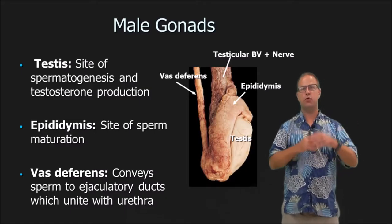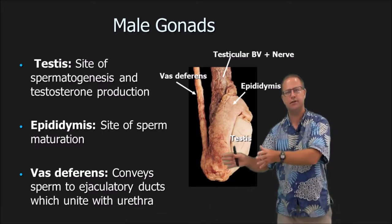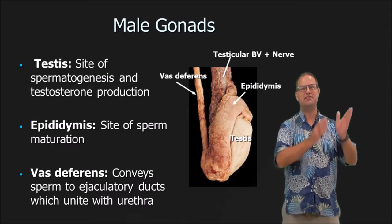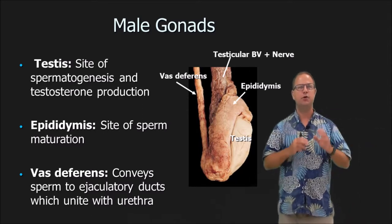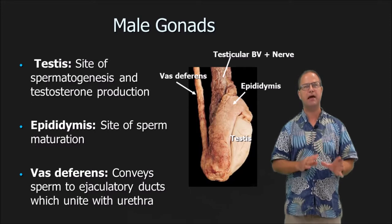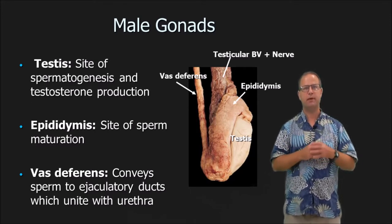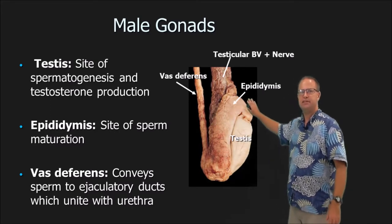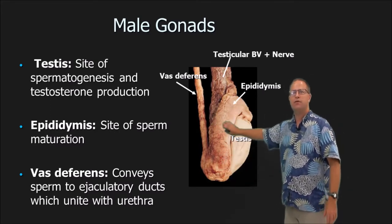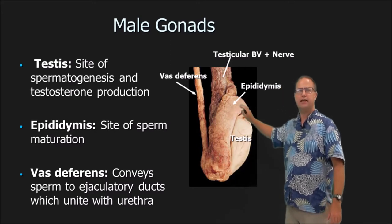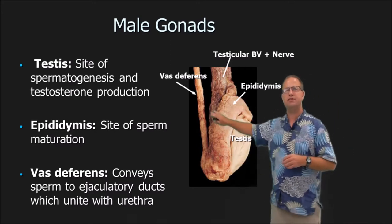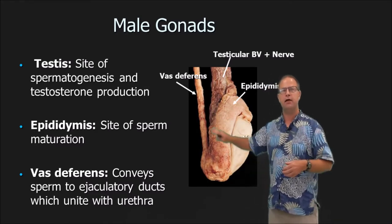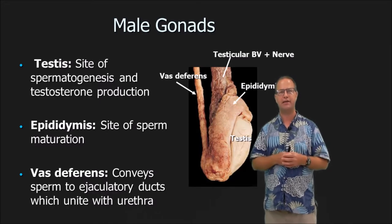Now, the male gonads — the testes. A testis is the site of sperm production, called spermatogenesis, and also where testosterone is made. Surrounding the testes is the epididymis, where sperm mature until they're ready to be ejaculated. The vas deferens, or ductus deferens, transmits spermatozoa from the epididymis up to the urethra during ejaculation.